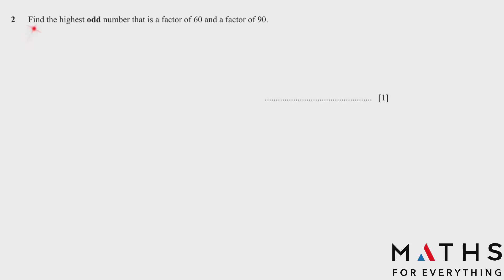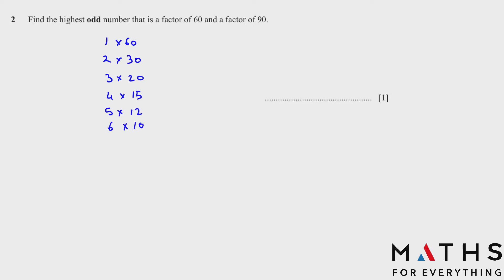Question 2: Find the highest odd number that is a factor of 60 and a factor of 90. Quickly write down the factors: 1×60, 2×30, 3×20, 4×15, 5×12, 6×10 — these are all the factors of 60. You can divide 60 by 2 to get 30, divide by 3 to get 20, and find factors that way. Now let's do the same for 90.